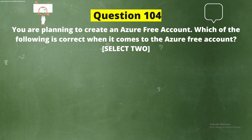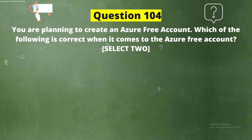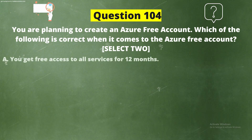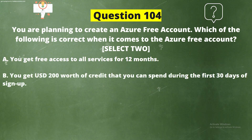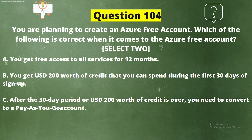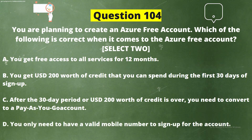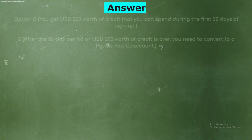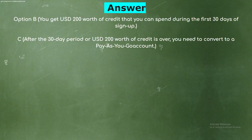Question 104. You are planning to create an Azure free account. Which of the following is correct? Select two options. The correct answers are Option B: You get USD 200 worth of credit to spend during the first 30 days of sign-up, and Option C: After the 30-day period or once the USD 200 credit is used up, you need to convert to a pay-as-you-go account.